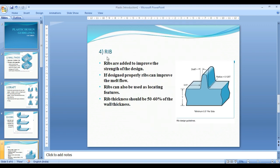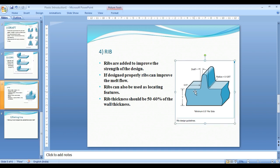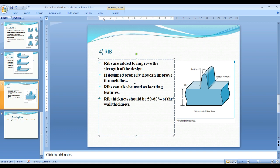Next is ribs. Ribs are added to improve the strength of the part and the design. Ribs increase the strength of the design and can improve melt flow.